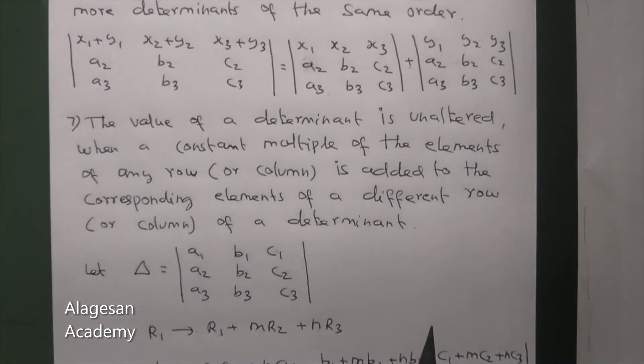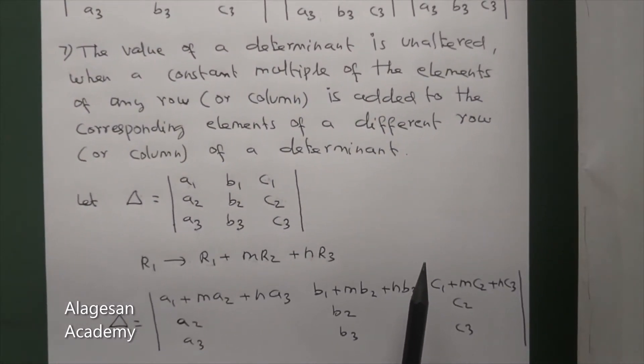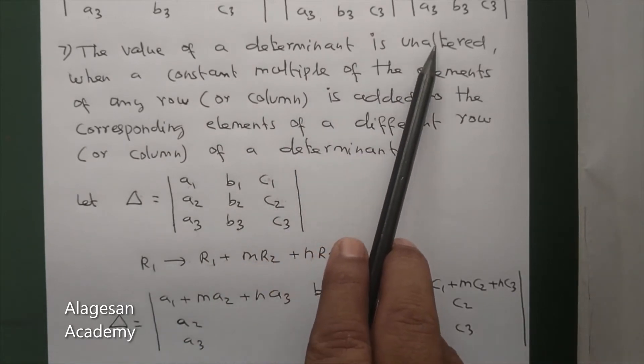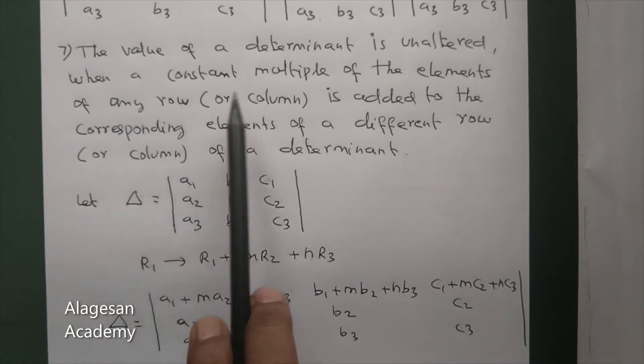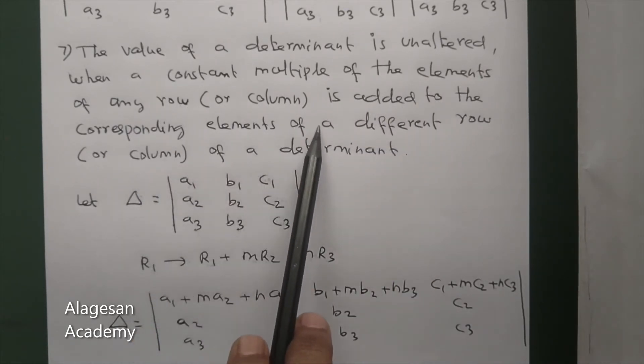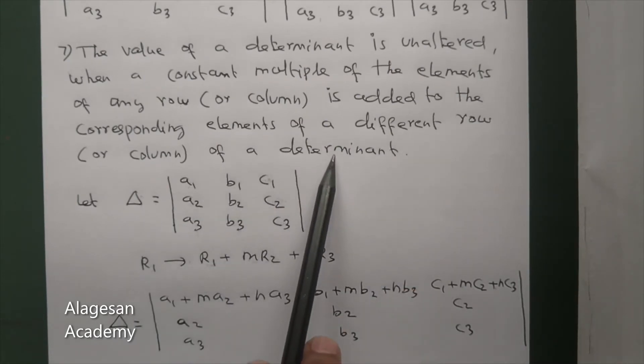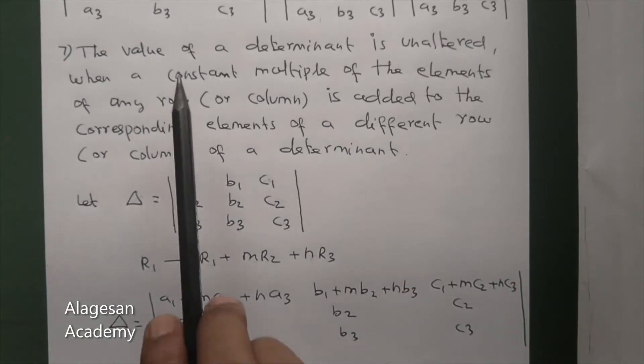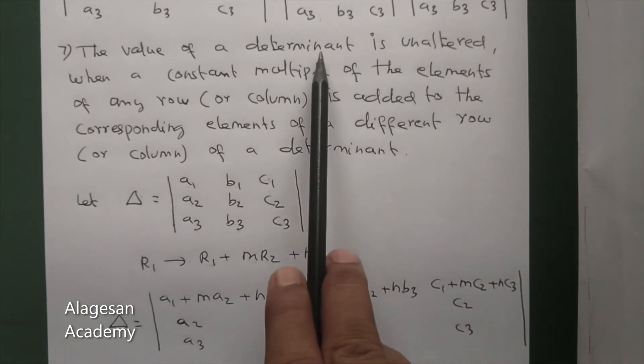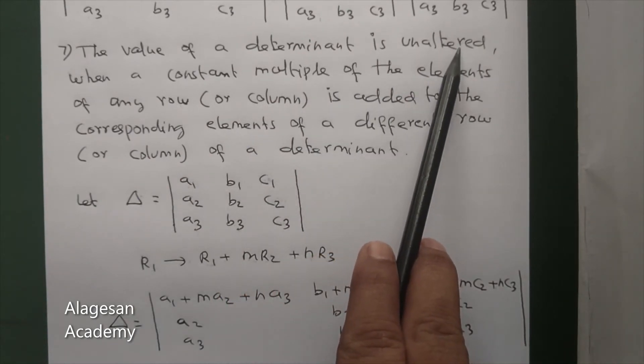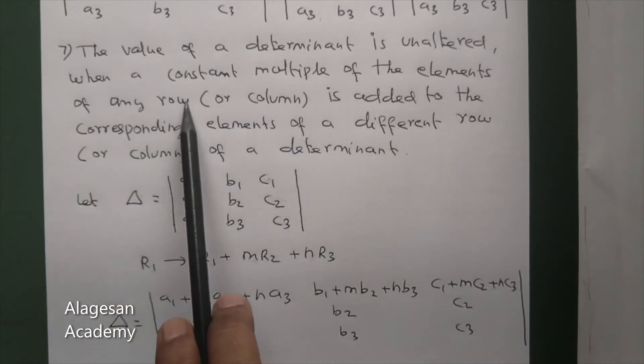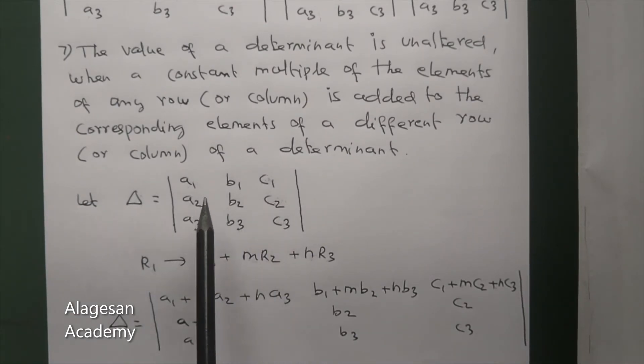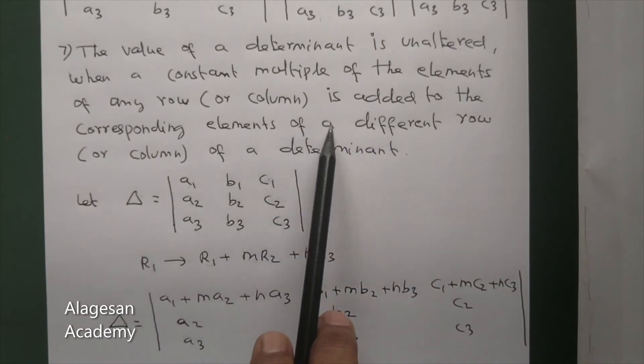See next property. The value of the determinant is unaltered when a constant multiple of the elements of any row is added to the corresponding elements of a different row of a determinant. The value of the determinant is unaltered - the value doesn't change when the constant multiple of the elements of any row is added to the elements of a different row.